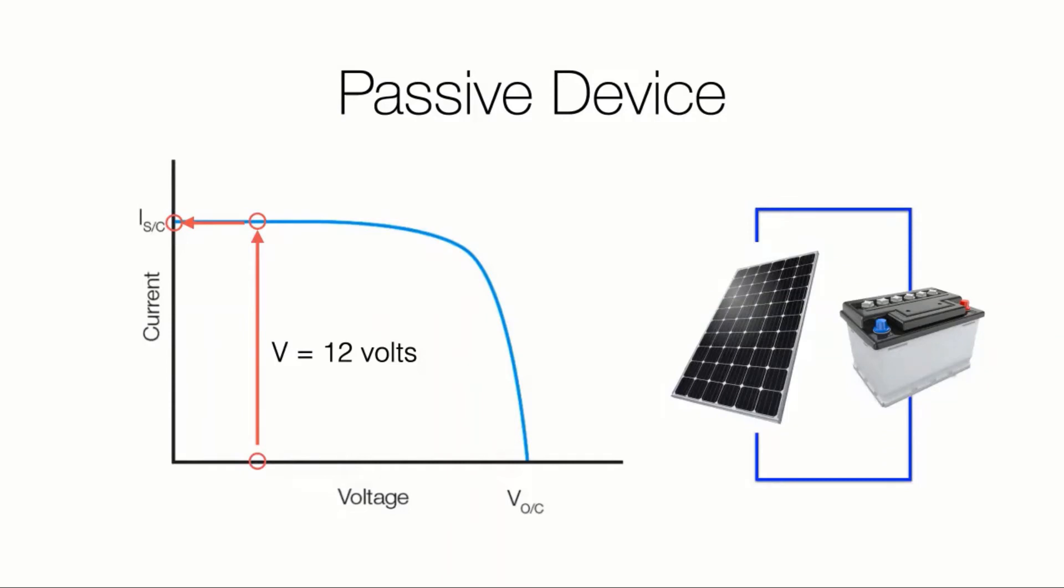Now we know that given this condition, a module will charge up a battery and its voltage will rise and it will move along the curve. But it's the battery telling the module, oh, I'm a little more charged, I'm now at 12.5 volts.